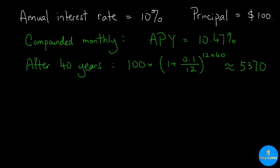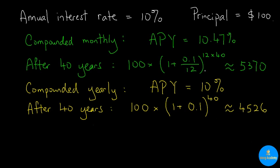Let's say the principal is $100. If the APY is 10.47%, after 40 years, we will get approximately $5,370. If the APY is 10%, or essentially, we are doing compounding yearly instead of monthly,